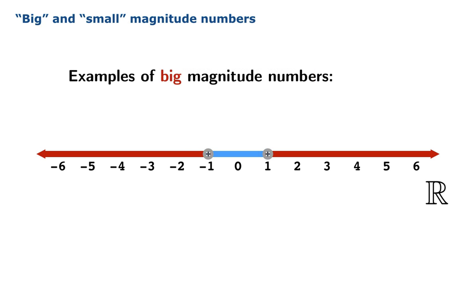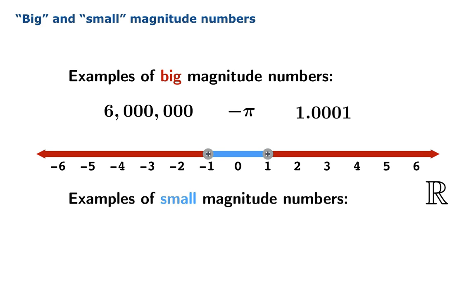Examples of big magnitude numbers are, not surprisingly, 6 million. Negative pi we're going to call a big magnitude number, and perhaps more surprising, 1.0001 will be by definition a big magnitude number. Small magnitude numbers include negative 1 half, 113 over 355, and 0.9999.